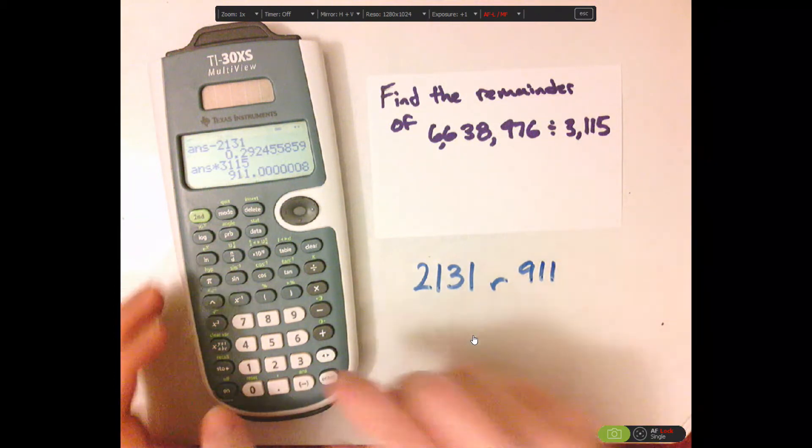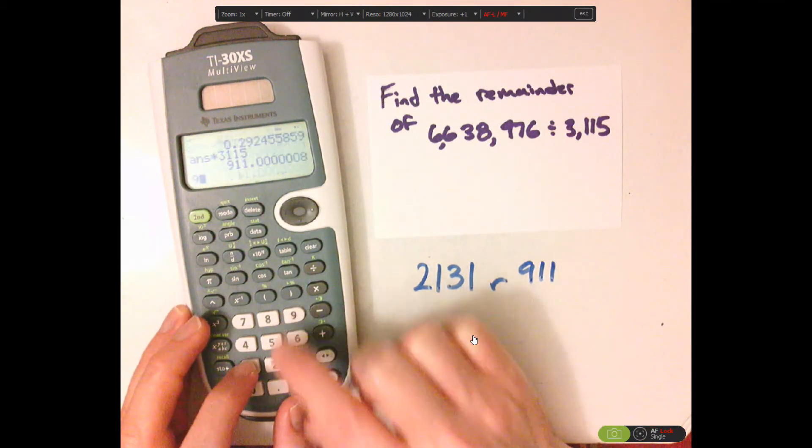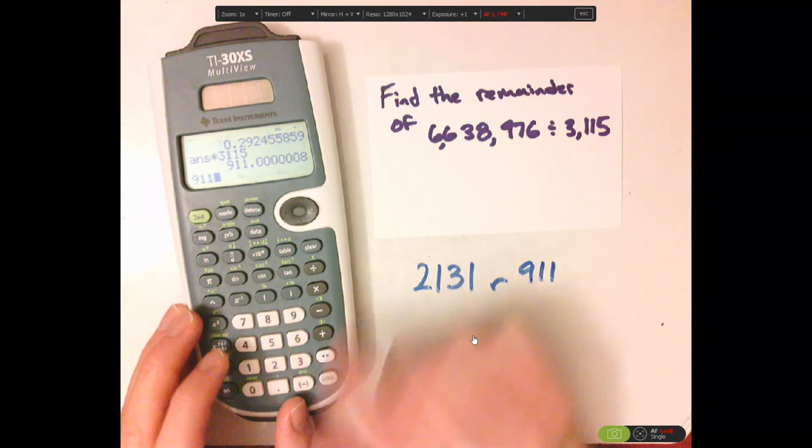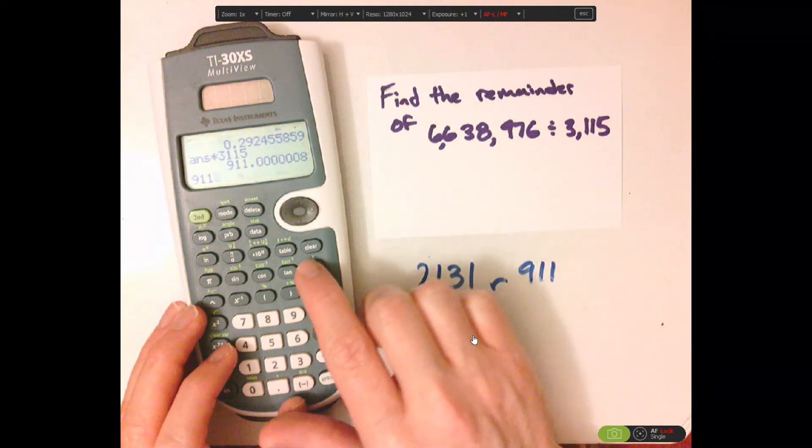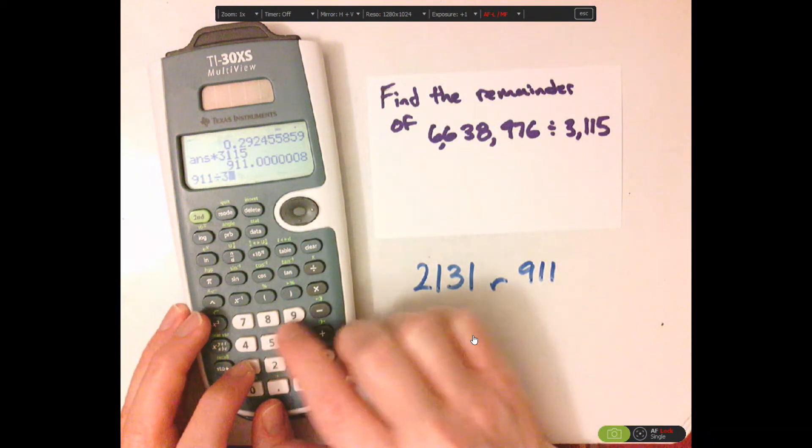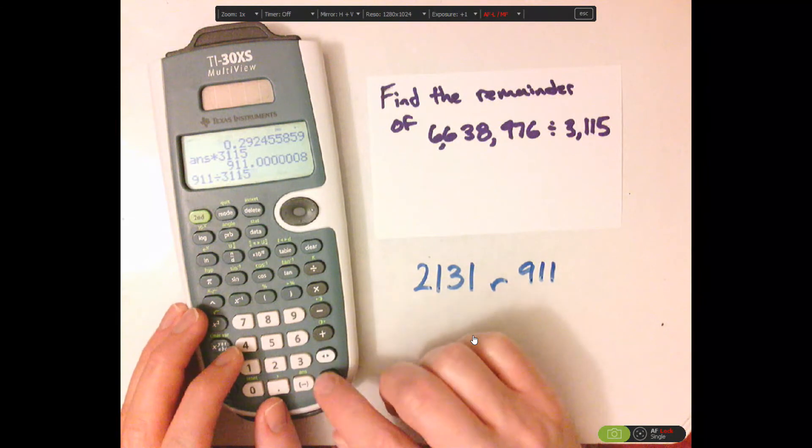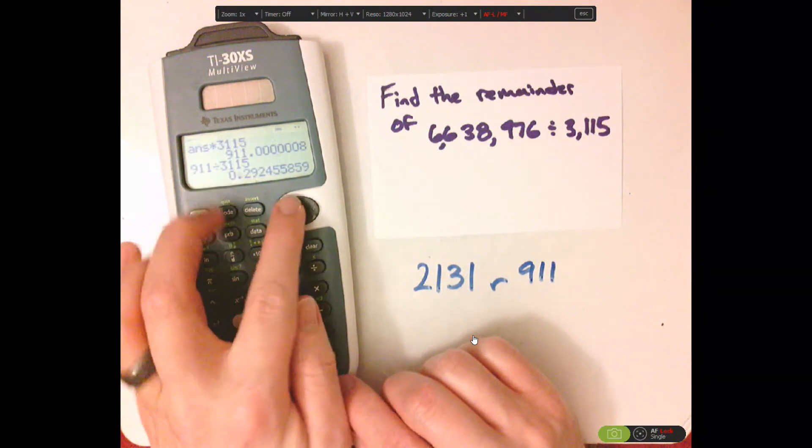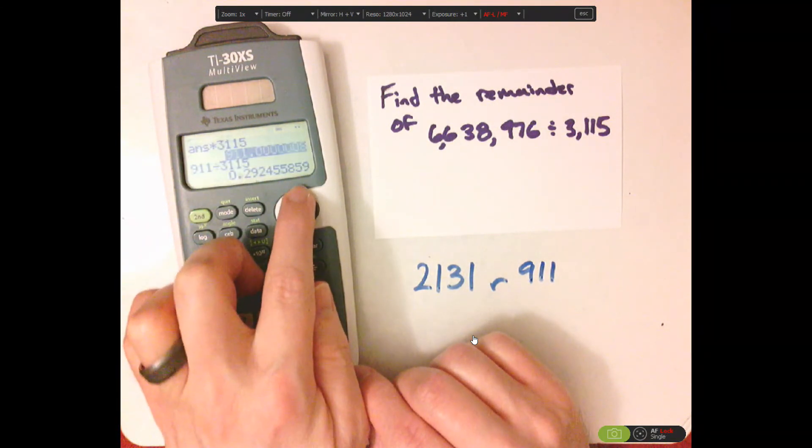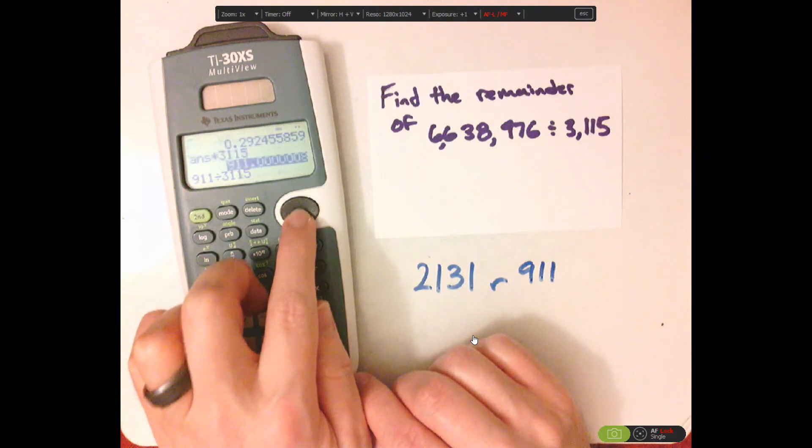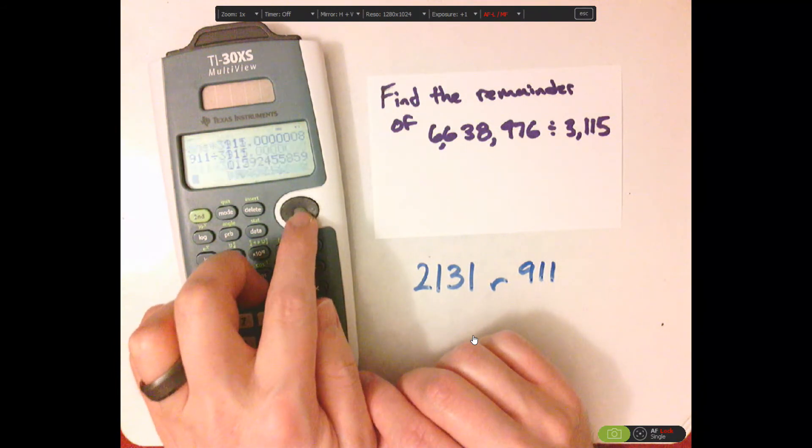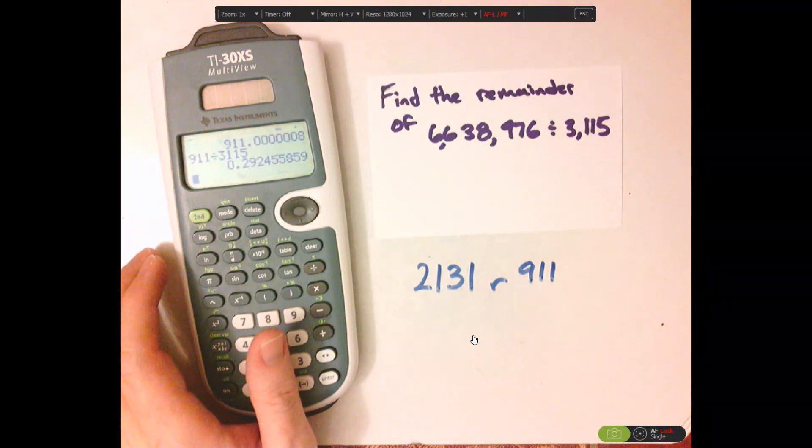And notice that when I do type in 911, divided by 3,115, I get that decimal. And that's the remainder trick.